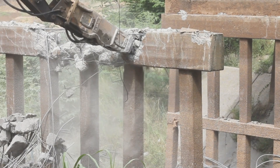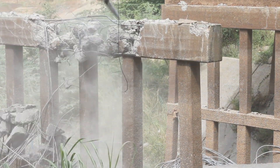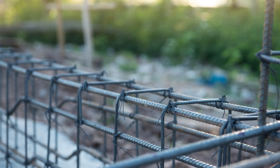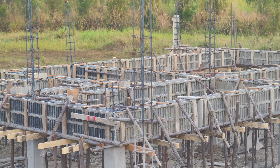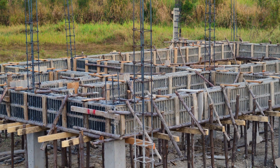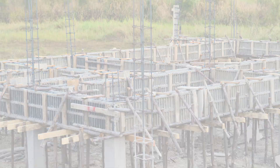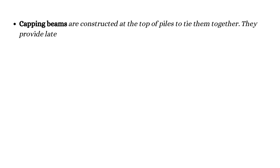Beams in foundation systems — such as capping beams, ground beams, strap beams, grade beams, and plinth beams — play distinct roles depending on structural and site-specific requirements. Capping beams are constructed at the top of piles to tie them together. They provide lateral stability and ensure effective load transfer in deep foundation systems.